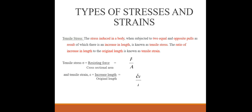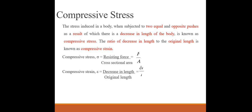Types of stresses and corresponding strains. First: tensile stress. The stress induced in a body when subjected to two equal and opposite pulls, as a result of which there is an increase in length, is known as tensile stress. The ratio of increase in length to the original length is known as tensile strain. In formula: tensile stress sigma equals resistance force divided by cross-sectional area, and tensile strain equals increase in length divided by original length.